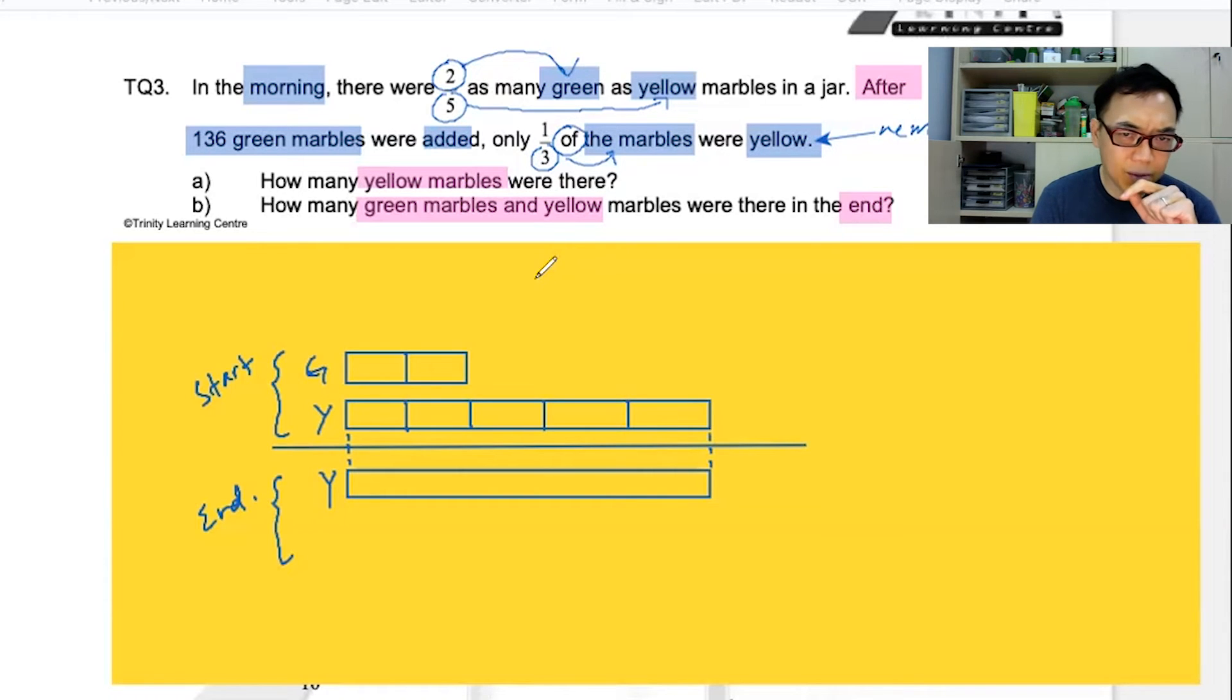So, if one-third of the marbles were yellow, the other two-thirds are not yellow. They are green. And if this represents one-third,